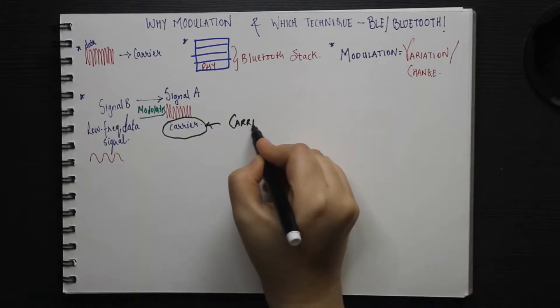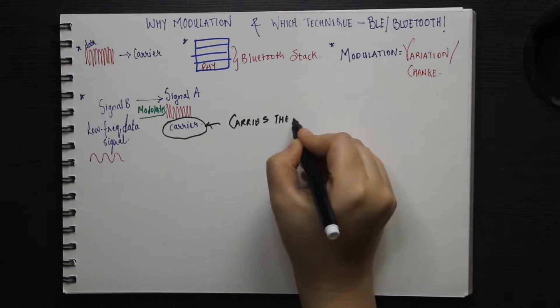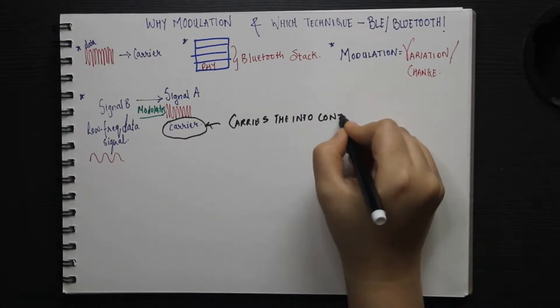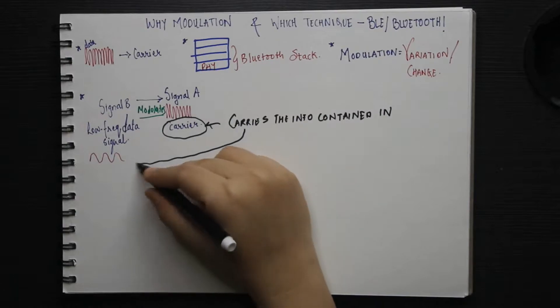In simple words, the high frequency carrier signal carries the information contained in the low frequency modulating or data signal.